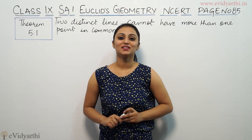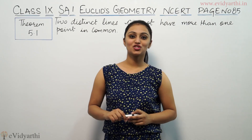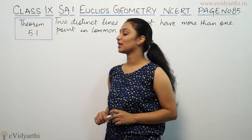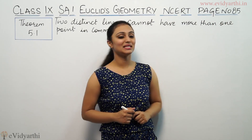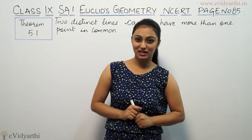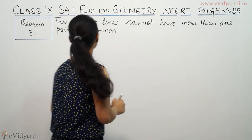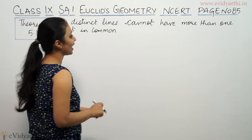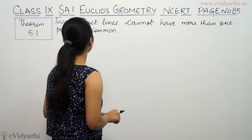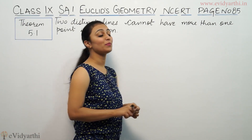Hi, this is Khushbu with another theorem of Euclid's geometry. This is theorem number 5.1 from NCERT page number 85. This says two distinct lines cannot have more than one point in common.